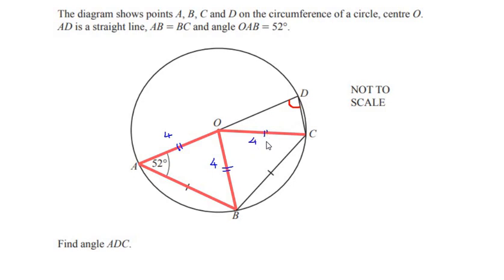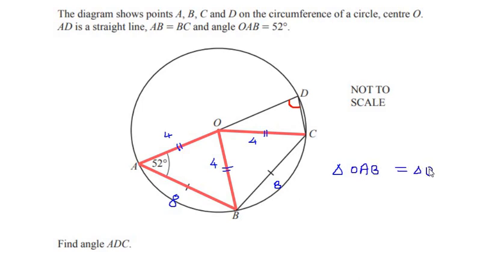OC can also be taken as 4 cm, for example. Since AB equals BC — if AB is 8 cm then BC is also 8 cm — we can see that triangle OAB is identical to triangle OBC.